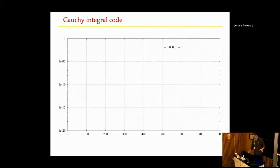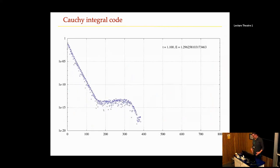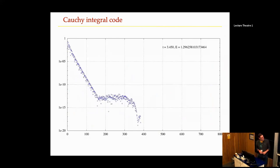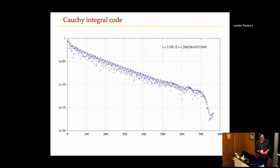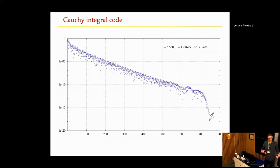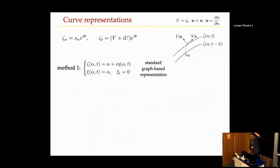A nice feature of these spectral methods is that you can add resolution as needed. For a long time only 384 modes were needed, and once the free surface got more complicated, you just add more modes — since the new ones were zero, adding double-precision-order values doesn't affect the solution. You can keep resolving as you go and put more points near the interesting dynamics.